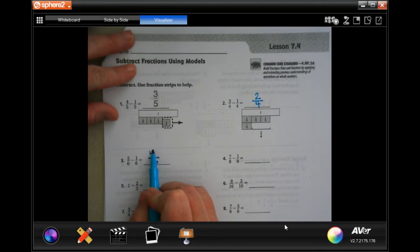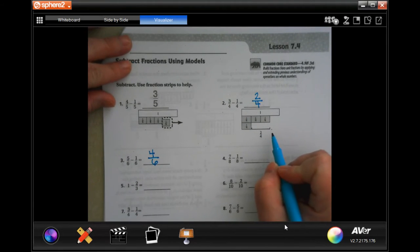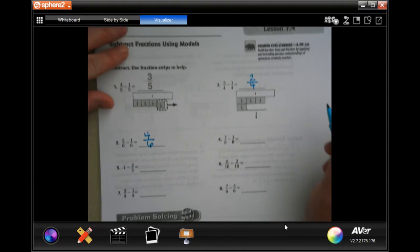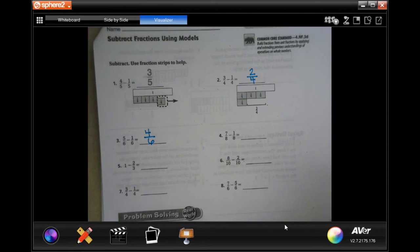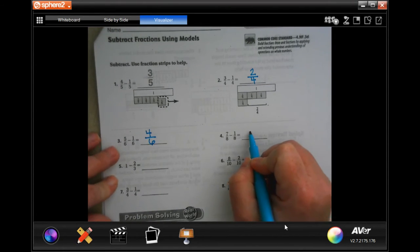Denominator stays the same. 5 minus 1 is 4. You can absolutely use the fraction structure you need to. I'm not going to.